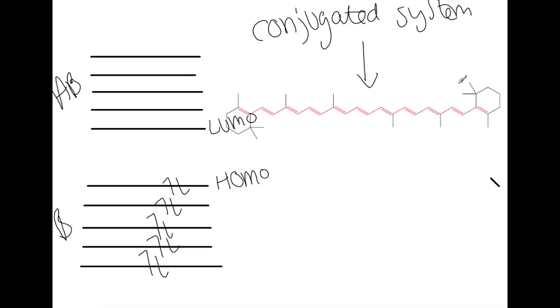The section of the molecule, the conjugated system, which allows color to be seen is called the chromophore. By having a larger, more complicated molecule, you end up causing the gap between the HOMO and the LUMO to become smaller.